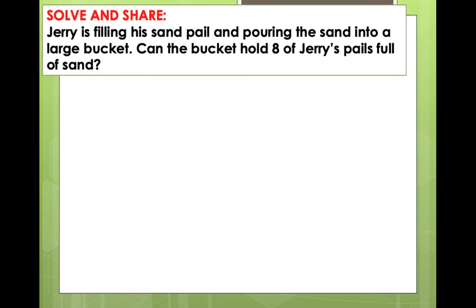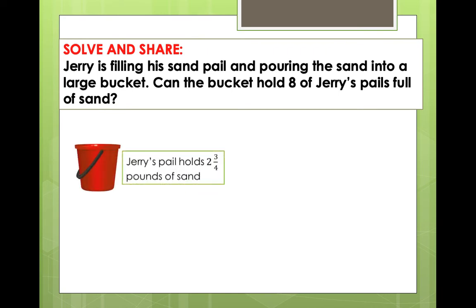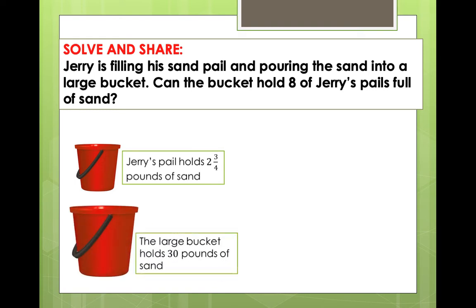Let us read and comprehend. Jerry is filling a sand pail and pouring the sand into a large bucket. Can the bucket hold 8 of Jerry's pails full of sand? Jerry's pail holds 2 and 3 fourths pounds of sand, and the large bucket holds 30 pounds of sand. Since multiplication is repeated addition, we can add 2 and 3 fourths by itself 8 times.